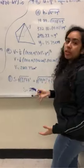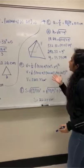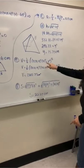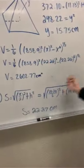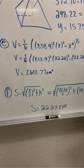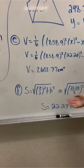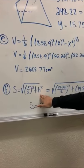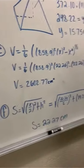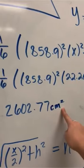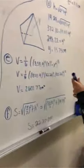We took the volume formula — one-sixth times 858.9 squared times x squared minus x to the sixth — and plugged in all the variables we had found. The volume came out to 2,602.77. A quick correction: the units should be centimeters cubed, not squared. So the volume is 2,602.77 centimeters cubed.